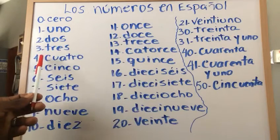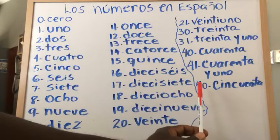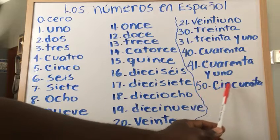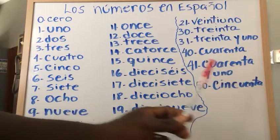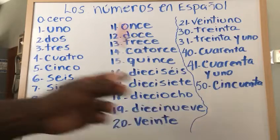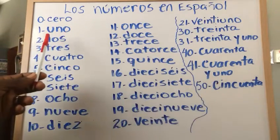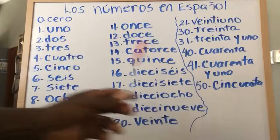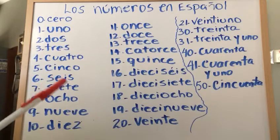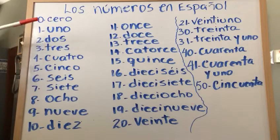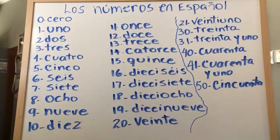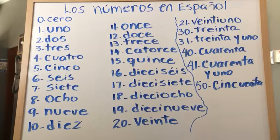Finally, you have 50 — 'cincuenta' — and then you do the same thing: 'cincuenta y uno,' 'cincuenta y dos,' 'cincuenta y tres.' It's not difficult — as long as you learn from 1 to 10, you can do the other numbers easily. I hope this will be helpful for your homeschooling, since a lot of people are doing homeschooling nowadays. It's time to say adios, clase — adios!